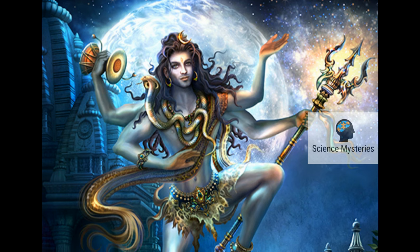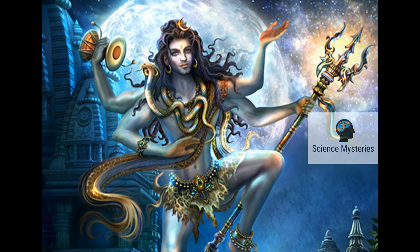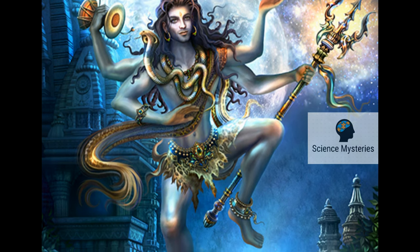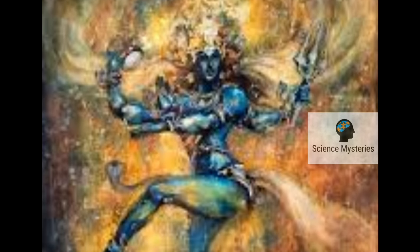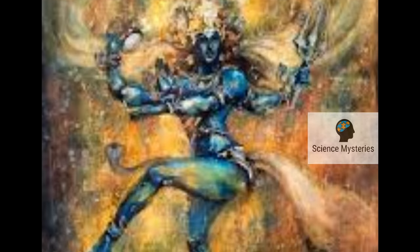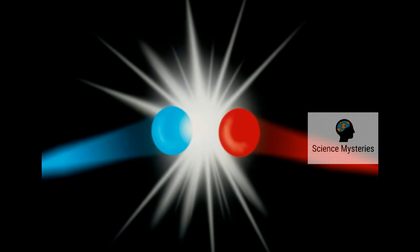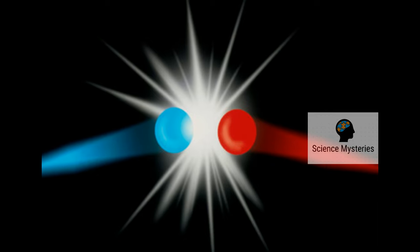This cosmic dance is the interaction of matter and antimatter. Whenever we create new particles, we create them in matter and antimatter pairs. They are literally equal and opposite components that make up everything we see.